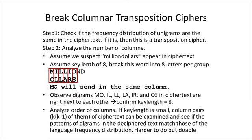With that arrangement, when columns are sent out, 'M-O' will appear in the same column next to each other, 'I-L', 'L-L', 'L-A', 'I-R', 'O-S' each as a separate column pair. We should observe these digrams appearing next to each other in the ciphertext, which would confirm the key length equals 8.